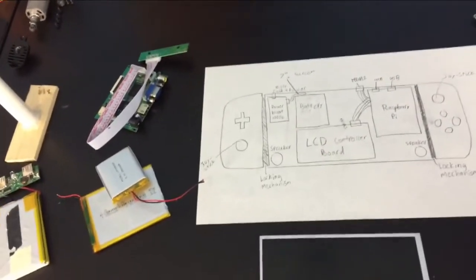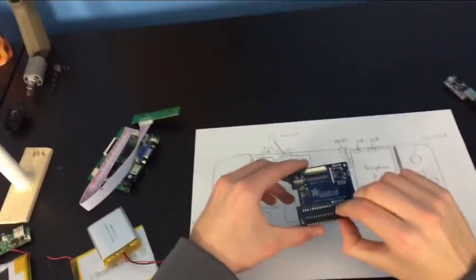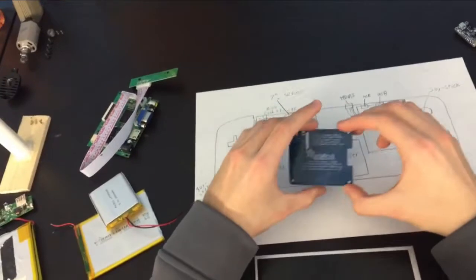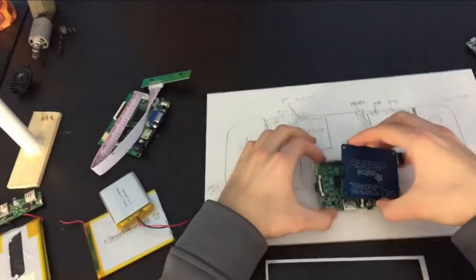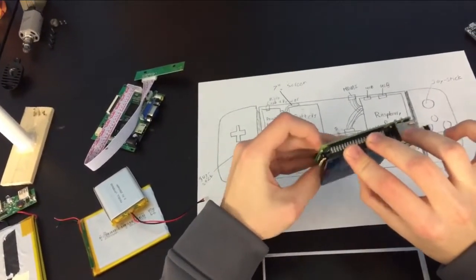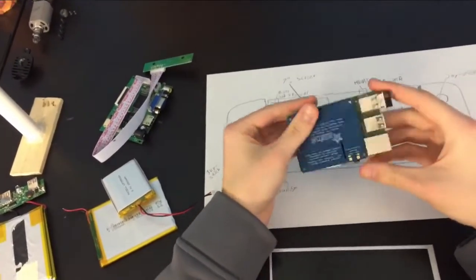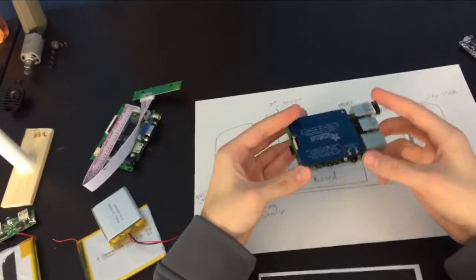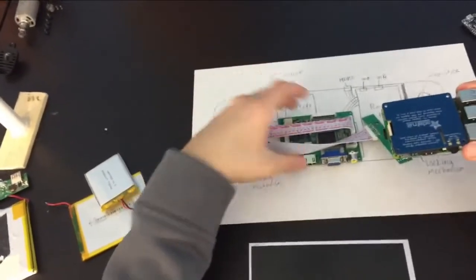Those are the main problems. The other things I might do is I might use this for the controller board because this is an Adafruit Kippa and it plugs into the Raspberry Pi like so. The screen plugs in here and that way the LCD controller board isn't going to be taking up a ton of space.